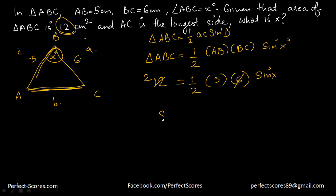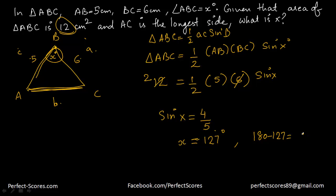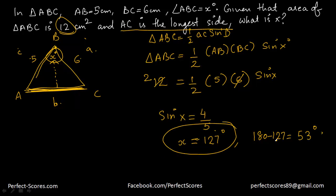From the equation: half × 5 × 6 × sin x = 12, so 15 sin x = 12, giving sin x = 4/5. Using the calculator, x is approximately 127 degrees. We also get the second solution 180 − 127 = 53 degrees. However, since AC is the longest side, angle x (opposite AC) must be the largest angle, so x = 127 degrees rather than 53 degrees, because if x were 53° one of the other angles would be larger, contradicting AC being the longest side.